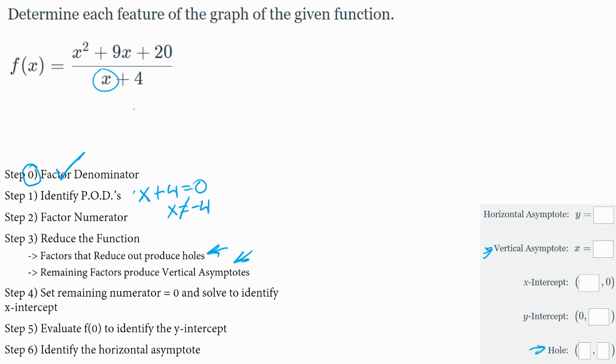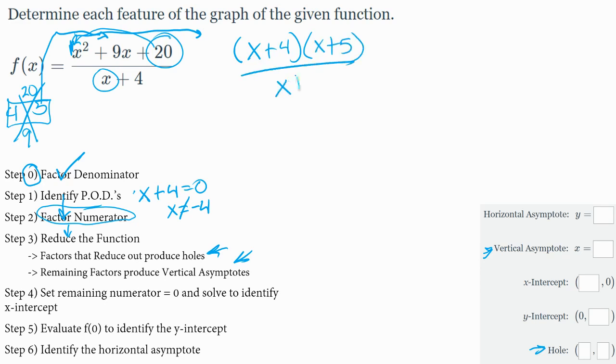So I say that I have to factor the numerator to do that next step. So I look at the numerator, and I use the magic x, and up on the top of the magic x, you've got your 20 times 1, which is 20, and then 9 on the bottom. And so I'm going to work with 4 and 5. Those are my magic numbers, and that can be my magic factors because there's a 1 here, so I don't have to do the grouping process. So it's going to turn out to be x plus 4 times x plus 5.